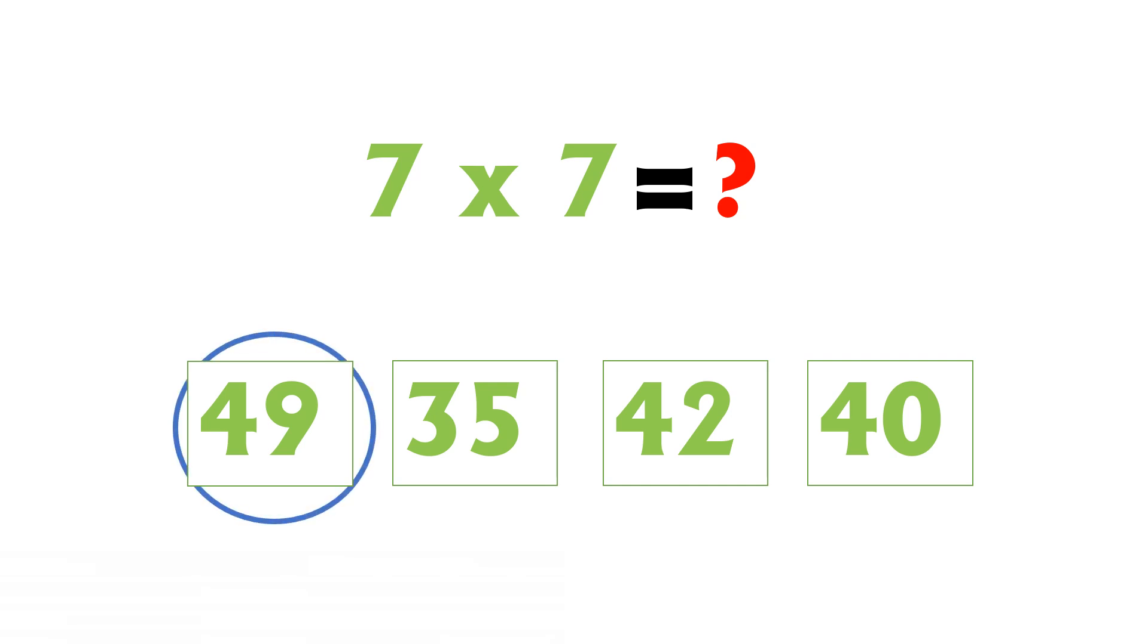7 sevens are 49. 9 multiplied by 6 means 9 sixes are, among all the options which is the correct